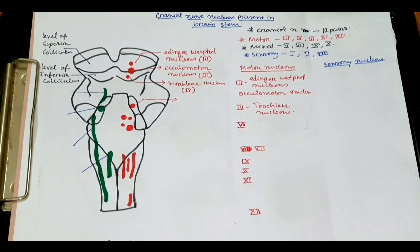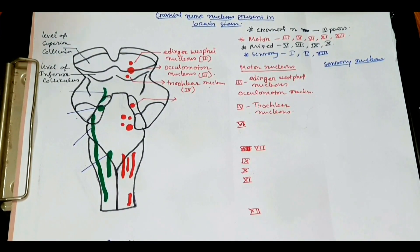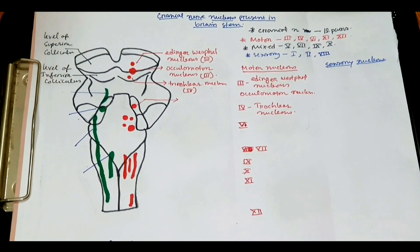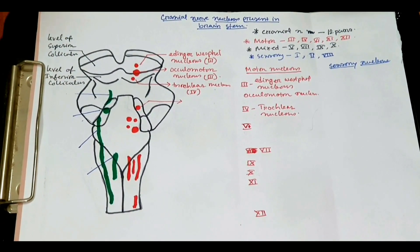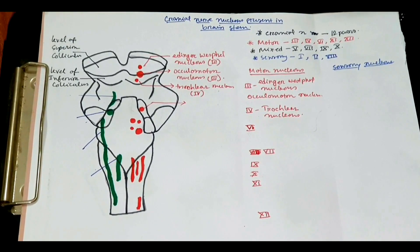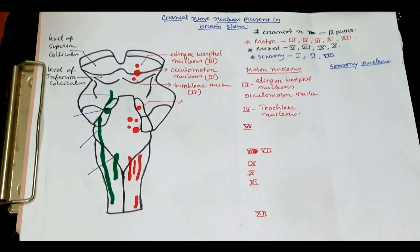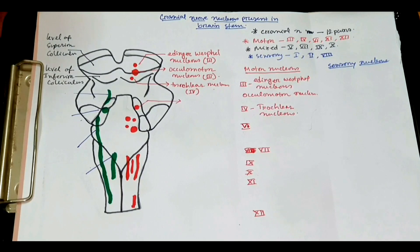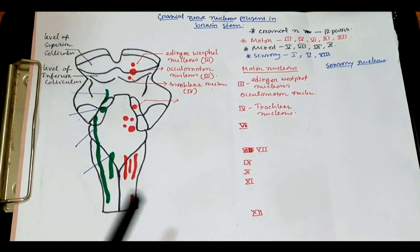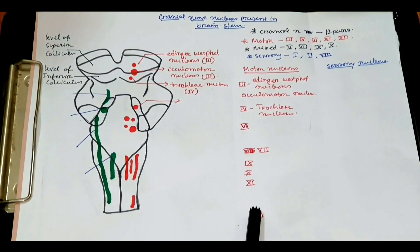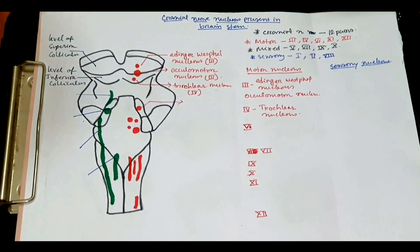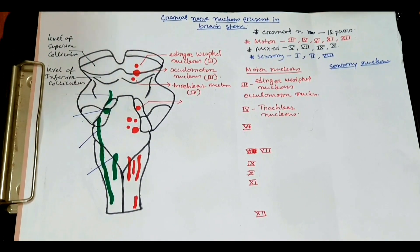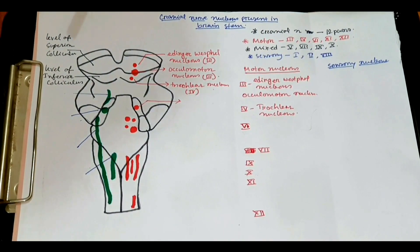Motor cranial nerves are 3, 4, 6, 11, and 12, and the mixed nerves 5, 7, 9, and 10 also have a motor portion. So I have written all the mixed and motor nerves here on the diagram.